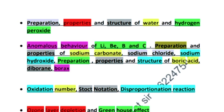Next is preparation, properties and structure of water, hydrogen. Anomalous behavior of lithium, beryllium, boron and carbon - diagonal relationship. If you will remember why they show anomalous behavior.